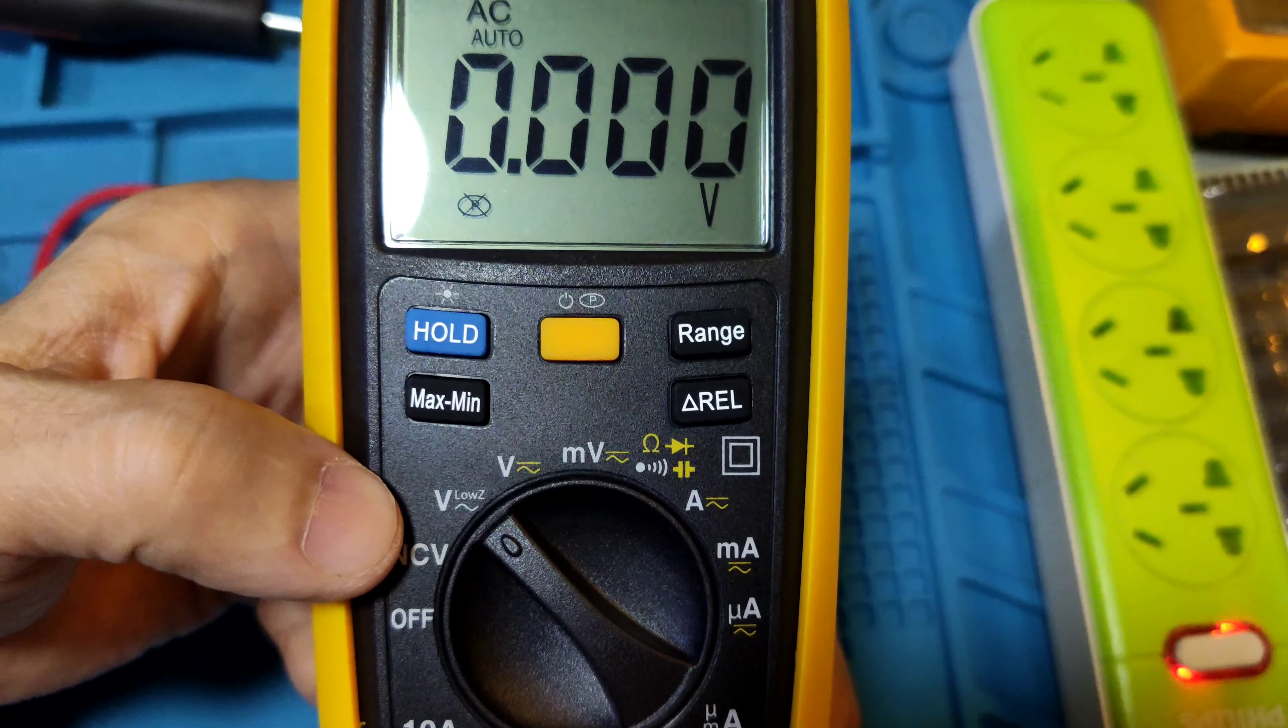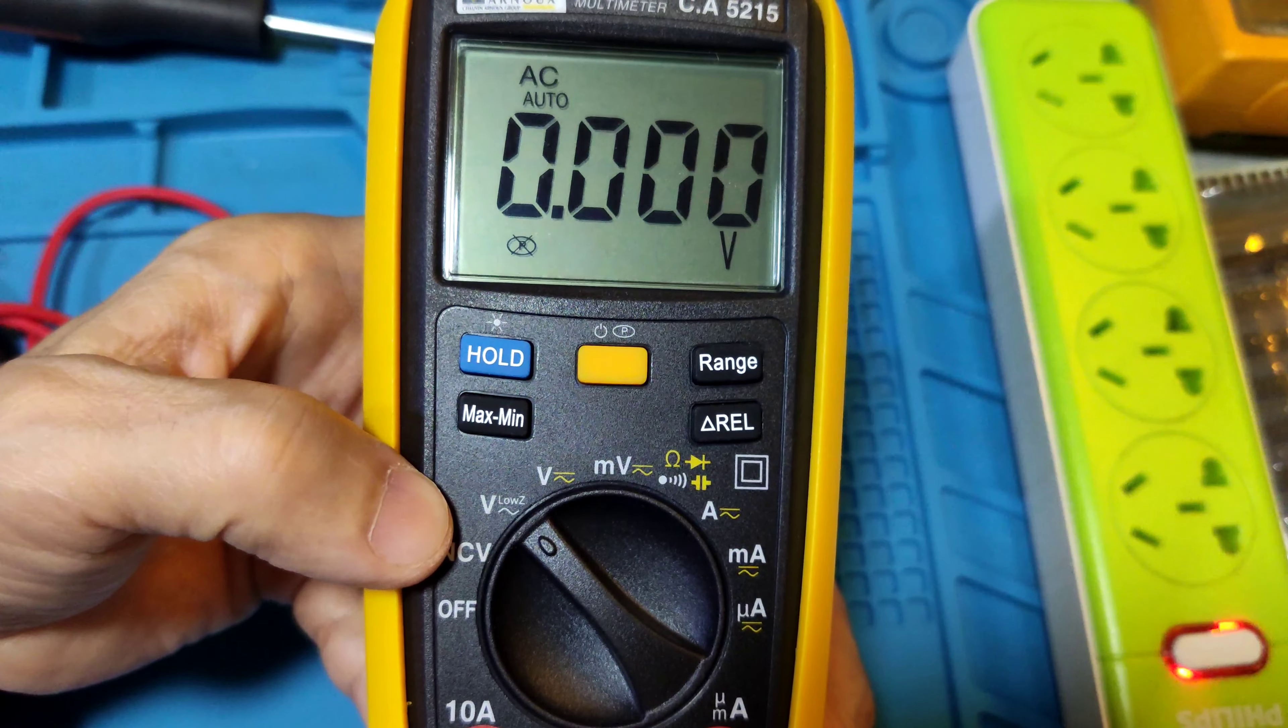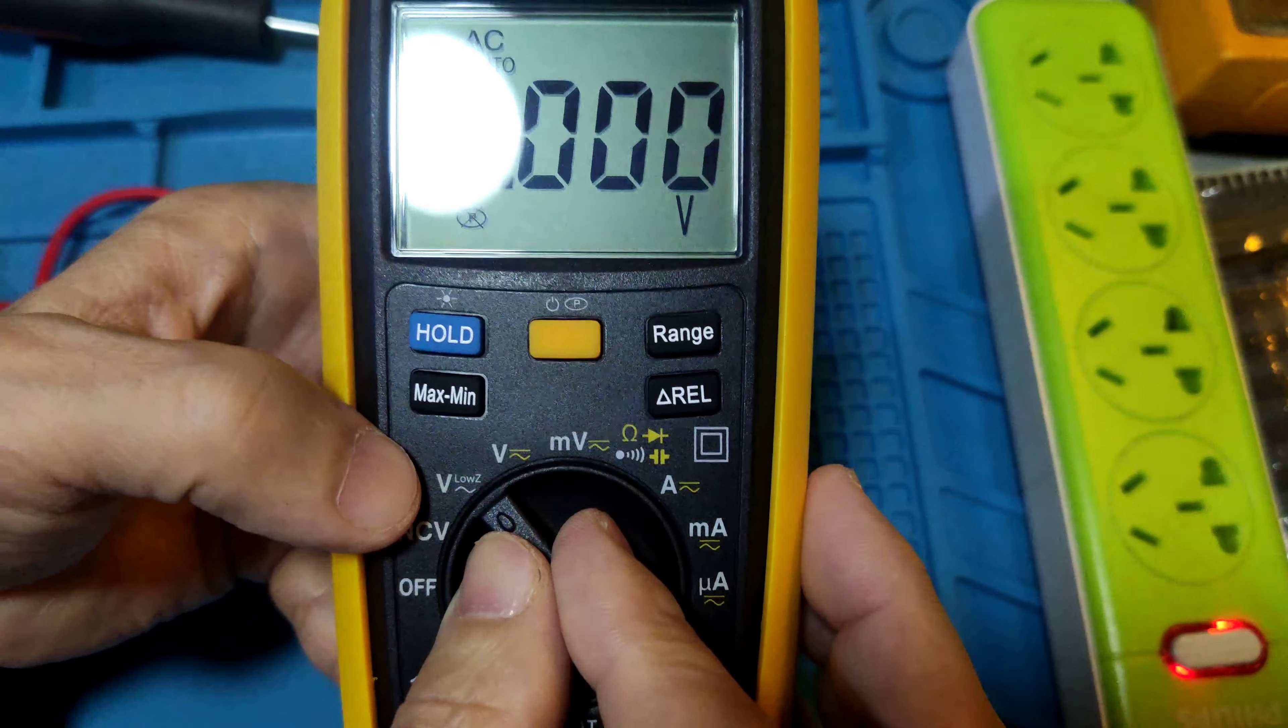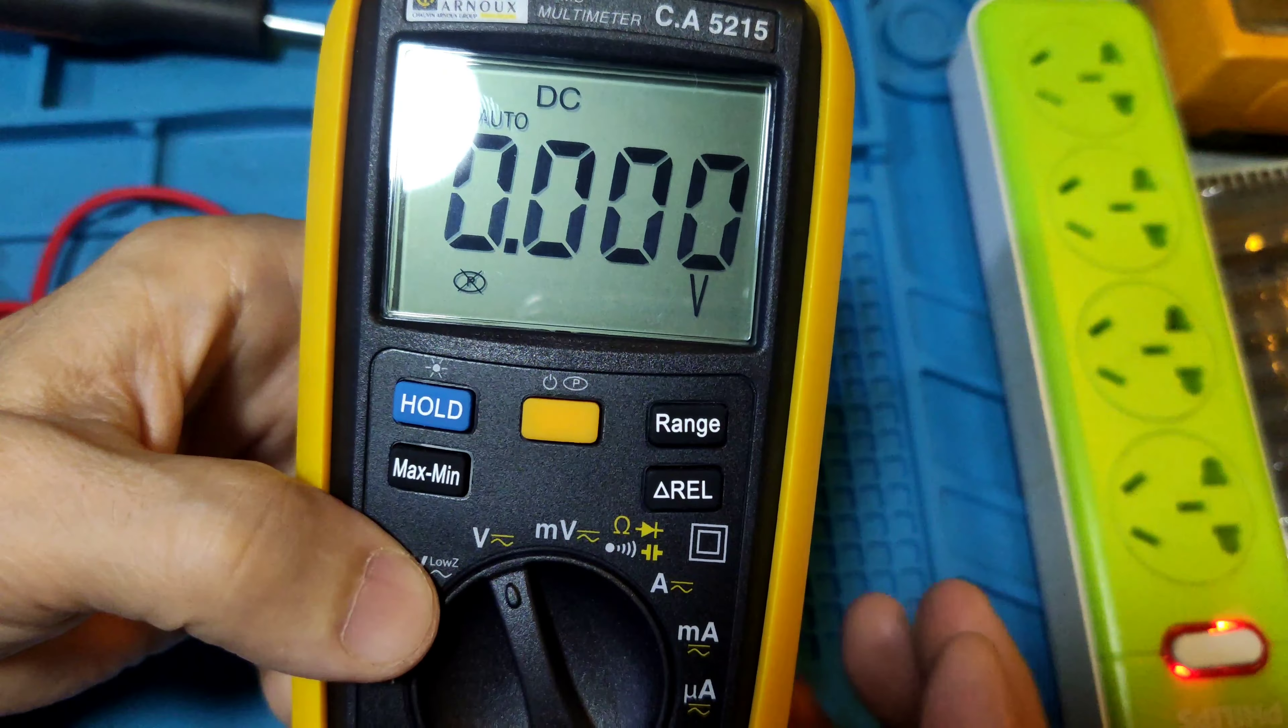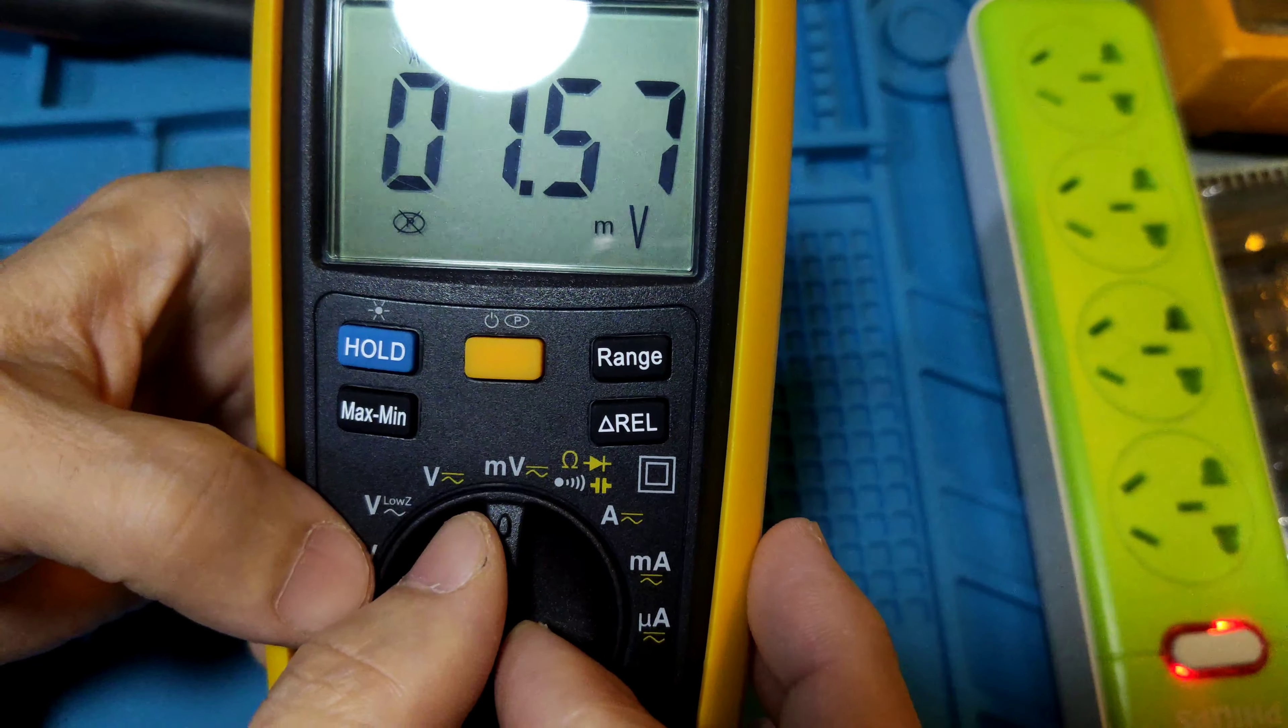Next is the low Z auto AC/DC range. In this position the meter can test circuit boards for ghost voltages - it can eliminate them. It can test the circuit board only, not for the electronic parts. Next is the normal voltage range. First one is AC, press the yellow key to turn to DC.